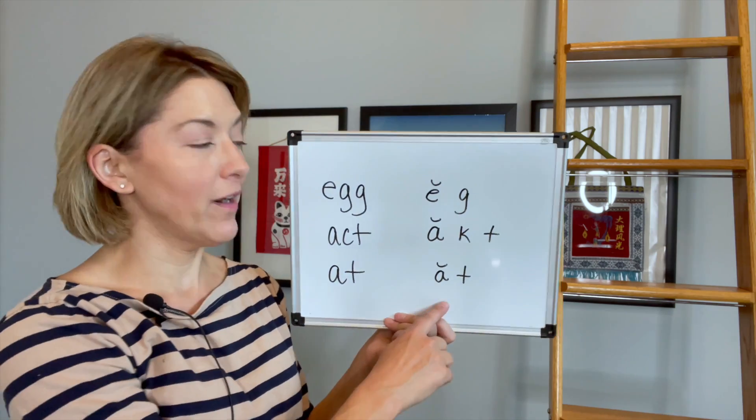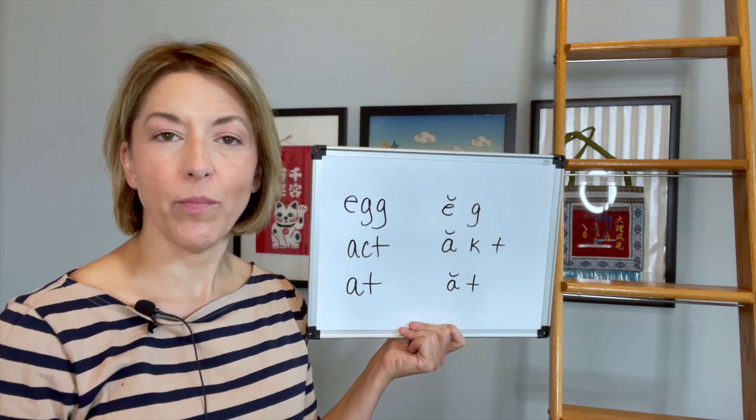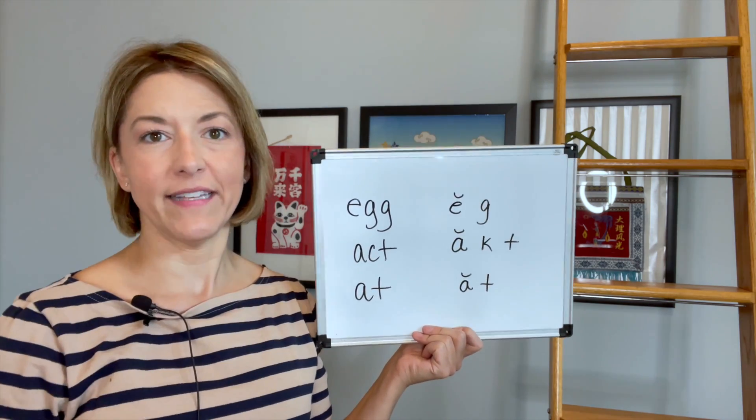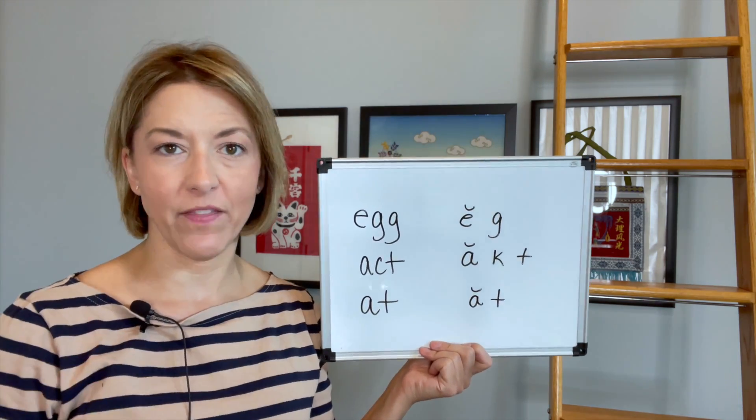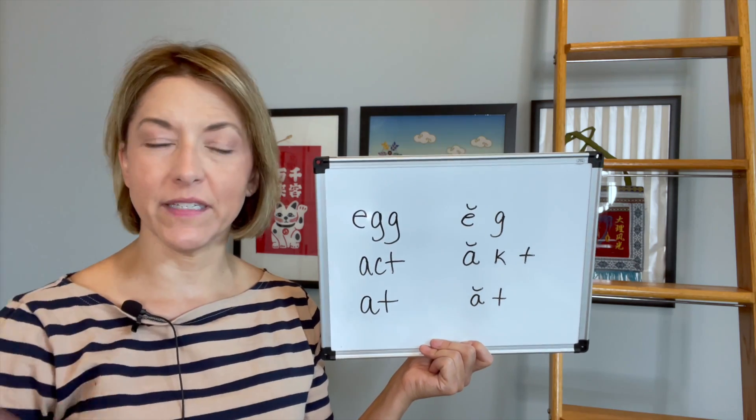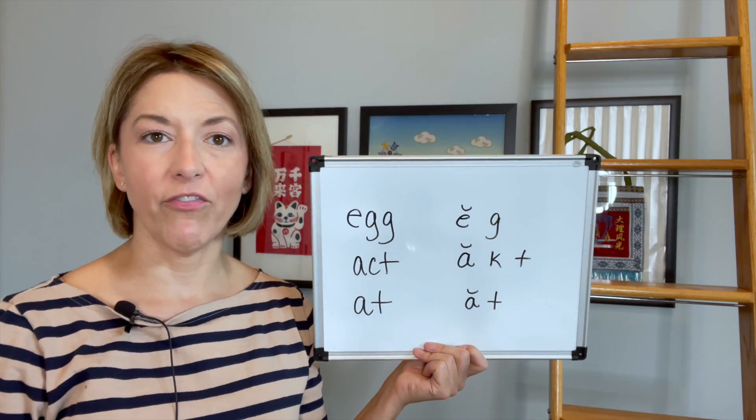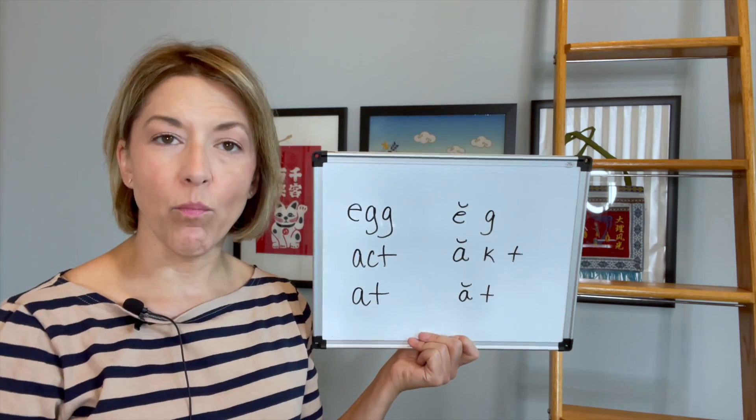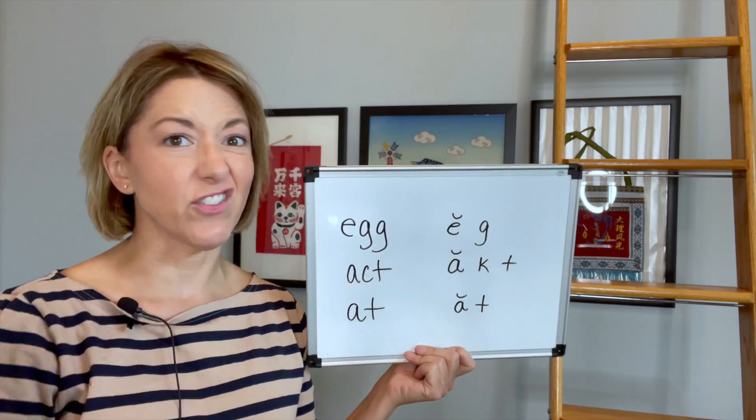When you hear this word at in conversation, you might hear at and that is the air is just stopping. The tongue is staying in the same place behind those top front teeth. It's just not pulling down and the air is not puffing out. So you might hear that. If you say at with more air puffing out, that's totally fine.